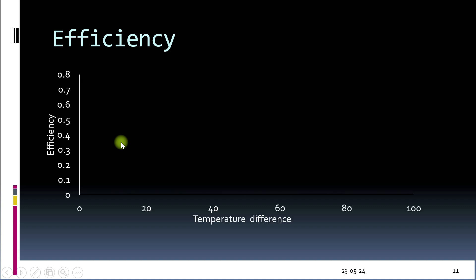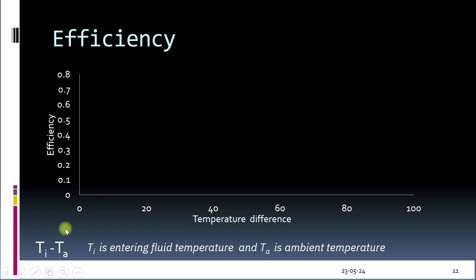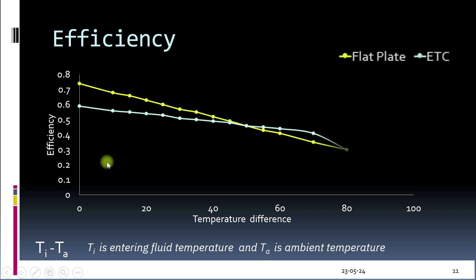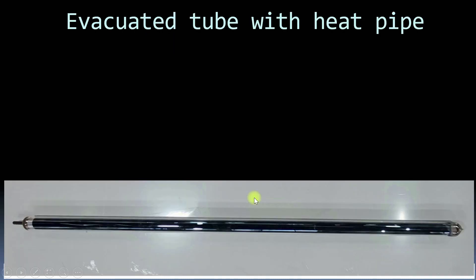The efficiency of both types of collector varies with the temperature difference between the entering water temperature and the ambient temperature. A smaller temperature difference means a hot environment; a large temperature difference means a cold environment. Plotting temperature difference on the x-axis and efficiency on the y-axis: in a hot environment the flat plate collector performs better, while in a cold environment the evacuated tube collector performs better. The most popular collector nowadays is the evacuated tube collector, which costs less and is easy to maintain.